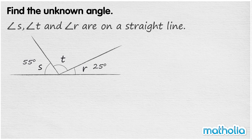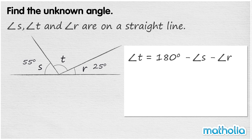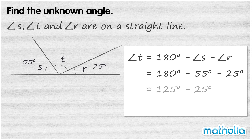Angle S, angle T, and angle R are on a straight line. We need to find angle T. Angle T equals 180 degrees minus angle S minus angle R. We know angle S equals 55 degrees and angle R equals 25 degrees. So angle T equals 180 degrees minus 55 degrees minus 25 degrees. 180 minus 55 equals 125 degrees; 125 minus 25 equals 100 degrees. So angle T equals 100 degrees.